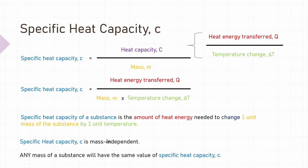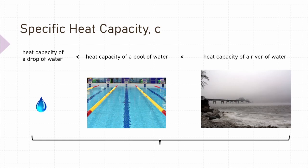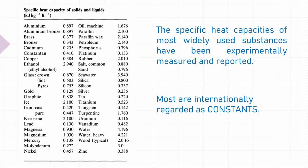To illustrate the differences between heat capacity and specific heat capacity, we can compare three bodies of water: a drop of water, a pool of water, and a river of water. The drop of water has the least mass, so it has the lowest heat capacity, while the river has the largest mass and therefore the largest heat capacity. However, in all three cases the material is water, so they all have the same specific heat capacity of around 4200 joules per kilogram per kelvin — meaning every 1 kilogram of water needs to absorb 4200 joules of energy to raise its temperature by 1 kelvin. For most common materials, specific heat capacities have been experimentally measured and are reported in books and literature, and most are internationally recognized as constants, such as in the table derived from the mechanical engineer's handbook.